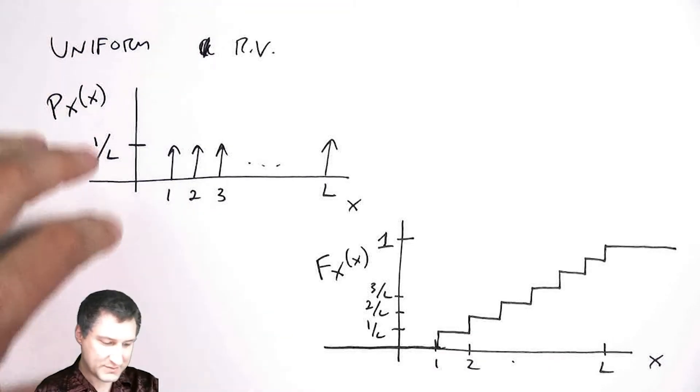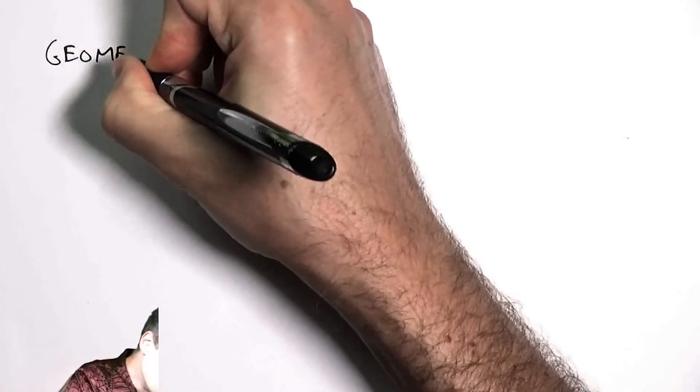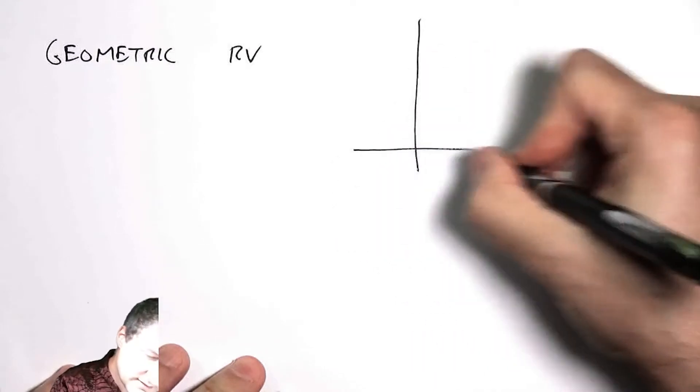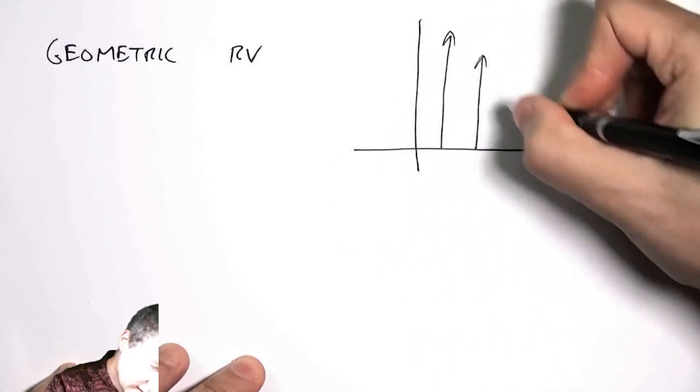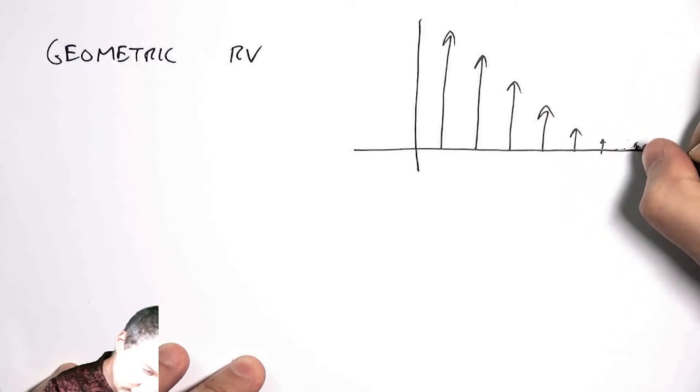For a geometric random variable, things are a little bit different because I accumulate probability at a slightly different rate. So remember that the geometric random variable looks like a decaying set of arrows.